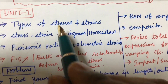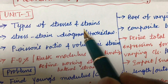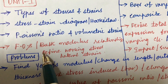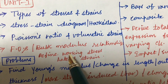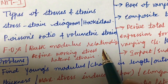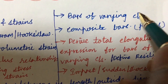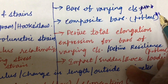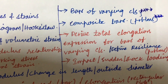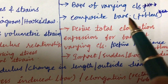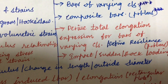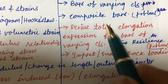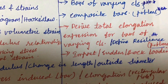Please concentrate on the following topics: types of stresses and strains, the stress-strain diagram, Hooke's law, Poisson's ratio, volumetric strain, factor of safety, bulk modulus and its relationships, lateral strain, and bars of varying cross-sections. The problems related to bars of varying cross-sections and composite bars are among the most important gunshot questions. You must also be able to derive the total elongation expression for a bar of varying cross-section.